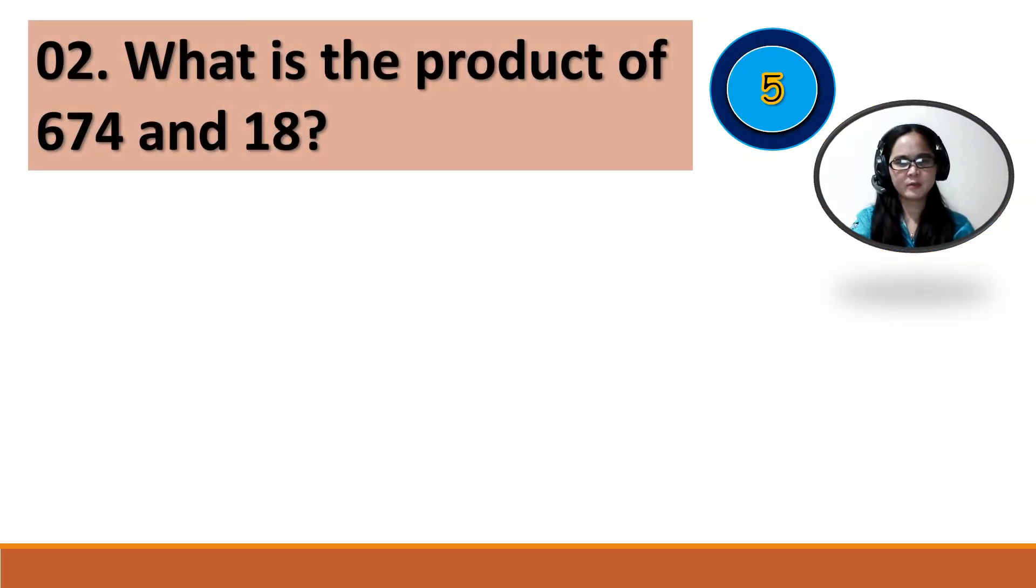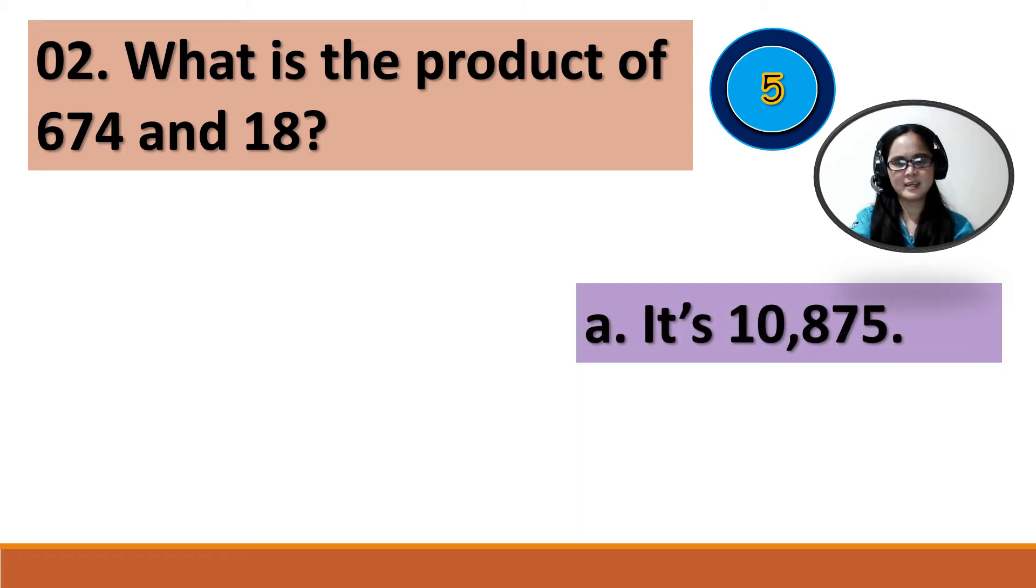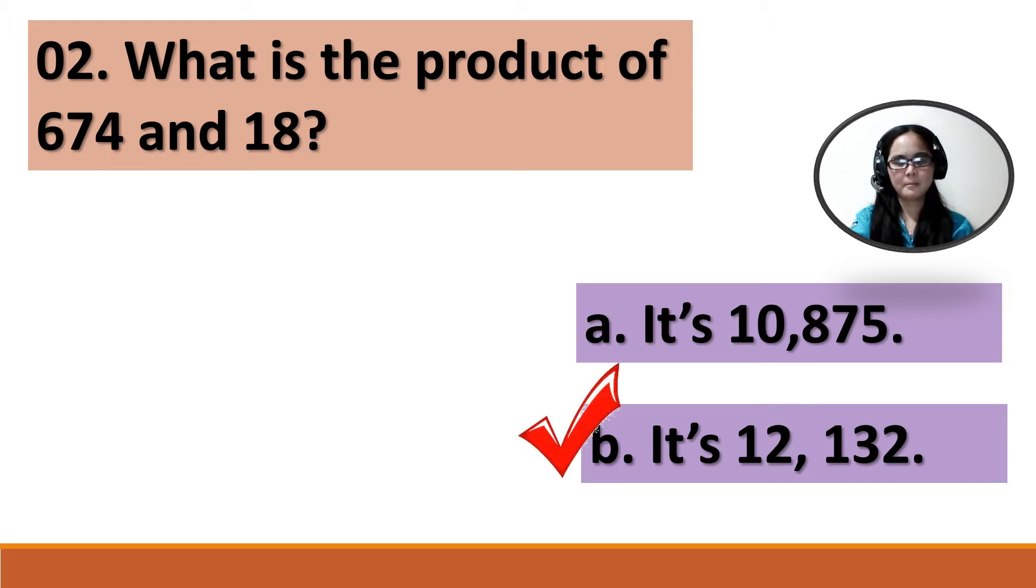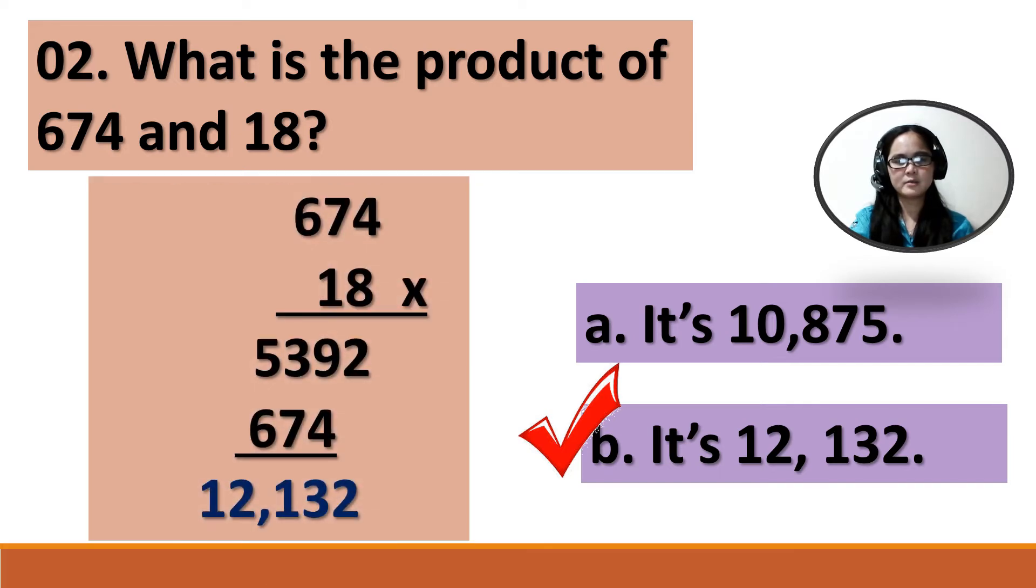Number 2: What is the product of 674 and 18? A. It's 10,875. B. It's 12,132. Your time starts now. Times up. The correct answer is letter B. It's 12,132. So, 674 times 18 equals 12,132.